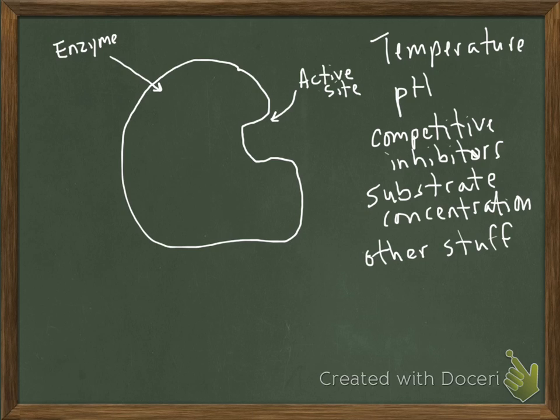Another thing that can decrease the ability of an enzyme to do what it needs to do is if there's molecules that are similar to the substrate molecules, but they're different enough that they can fit in the active site, but the enzyme can't metabolize them. It can't break them down.